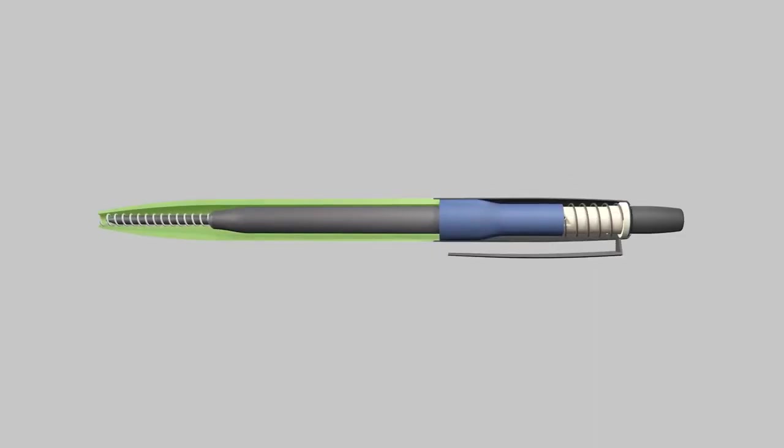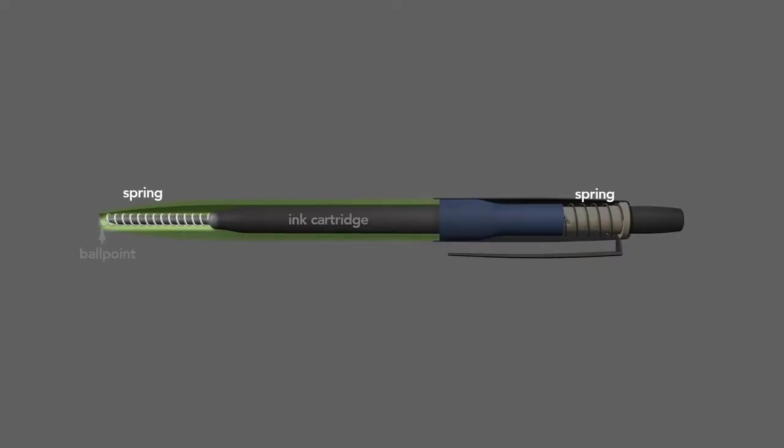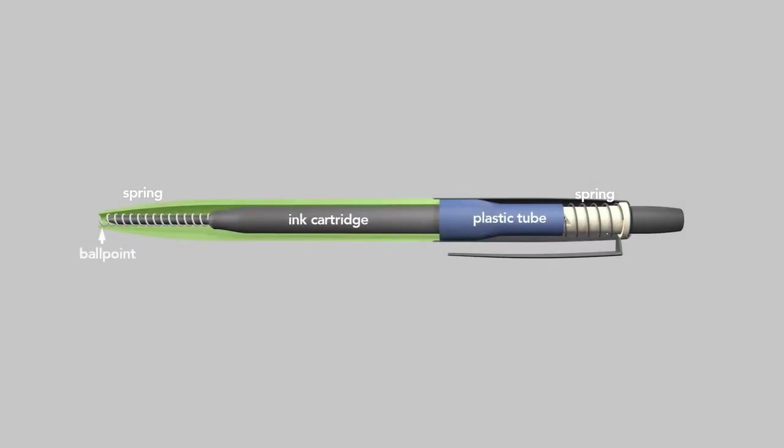The pen's barrel houses an ink cartridge with a ballpoint tip, two springs—one at the top and one at the bottom—and a plastic tube which is press-fit inside the metal barrel of the pen so that it's fixed in place.